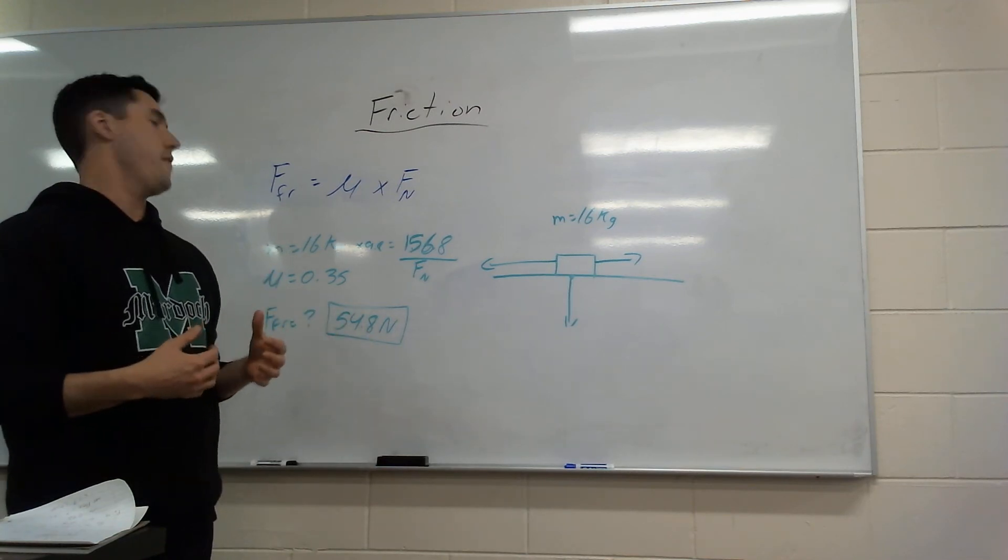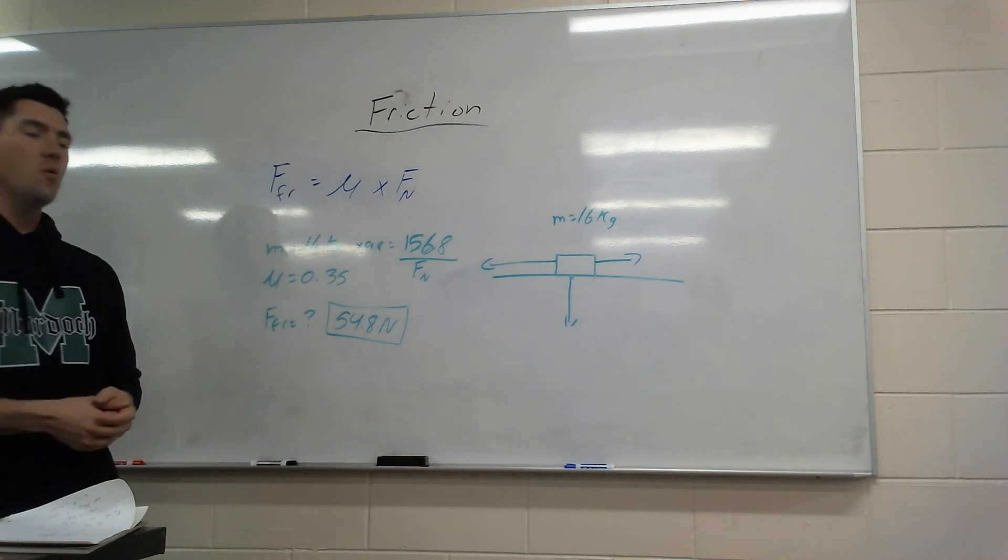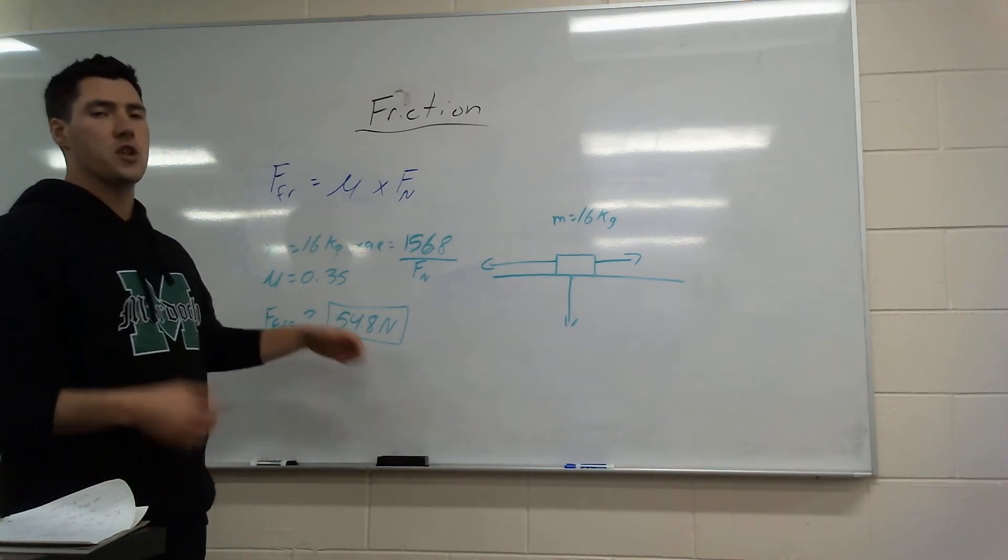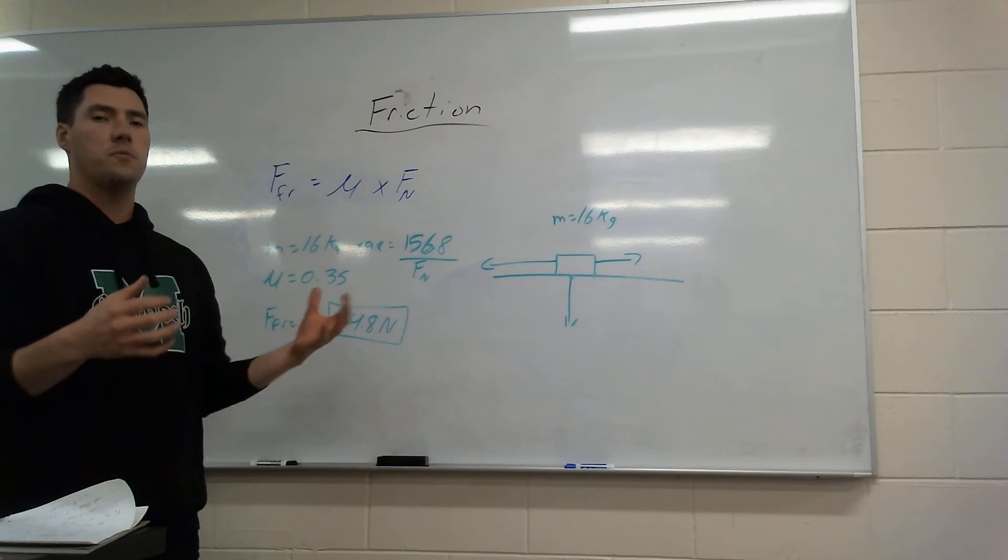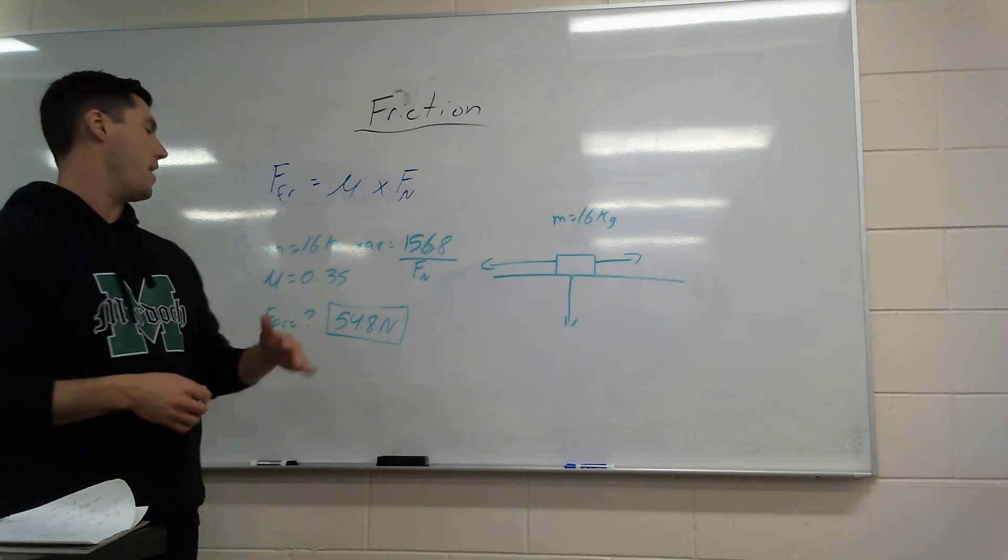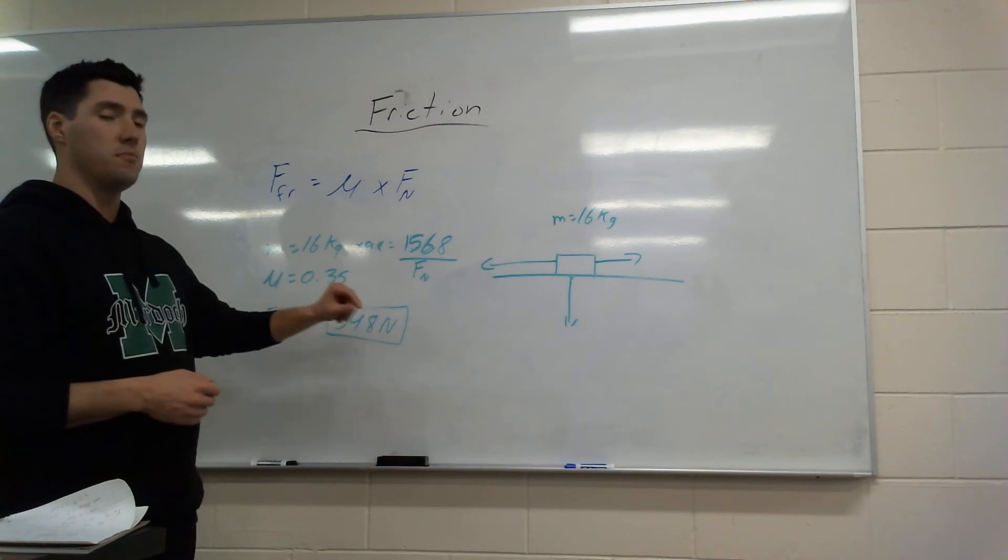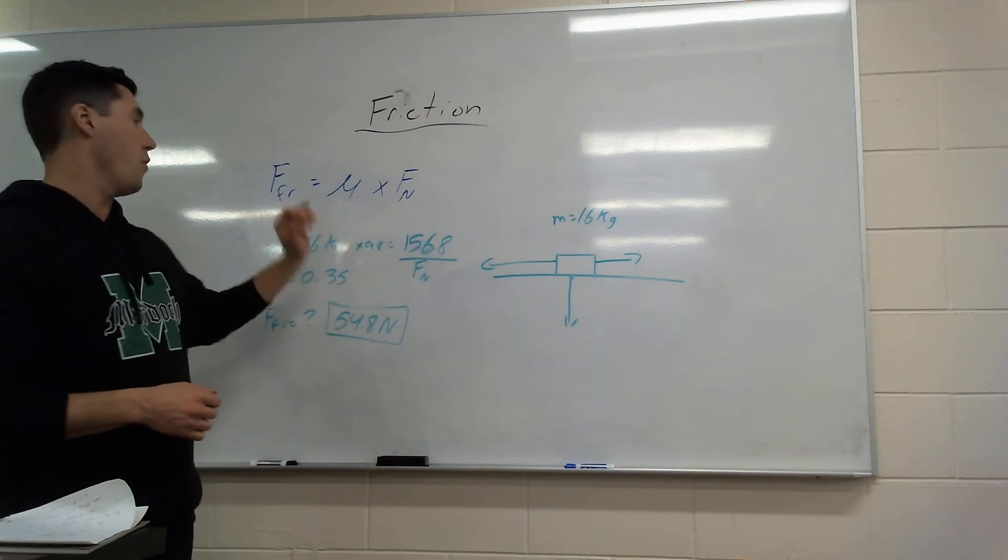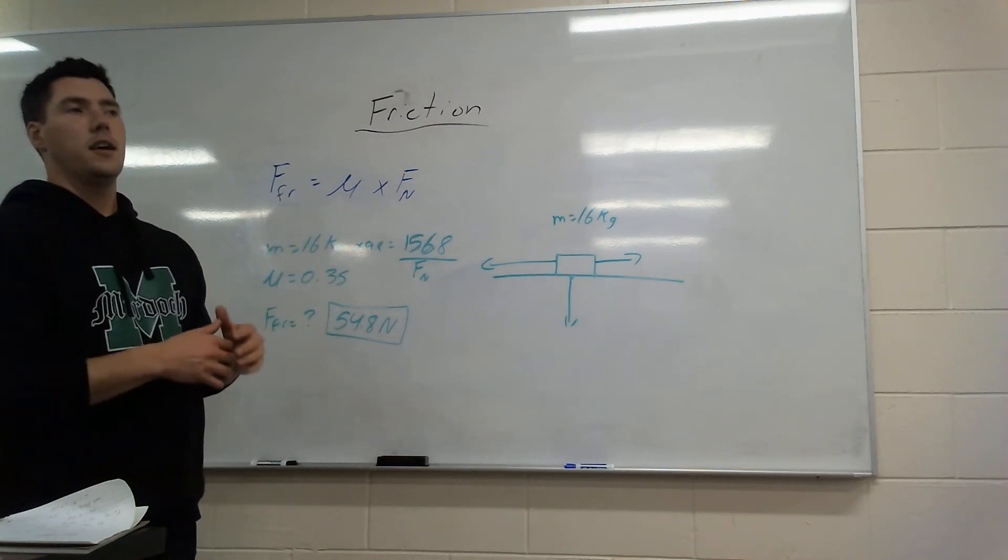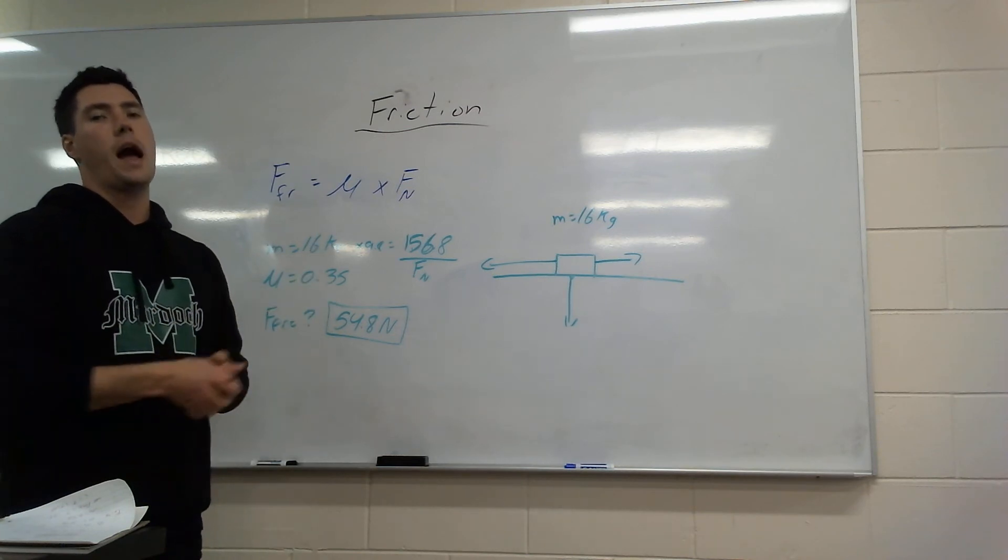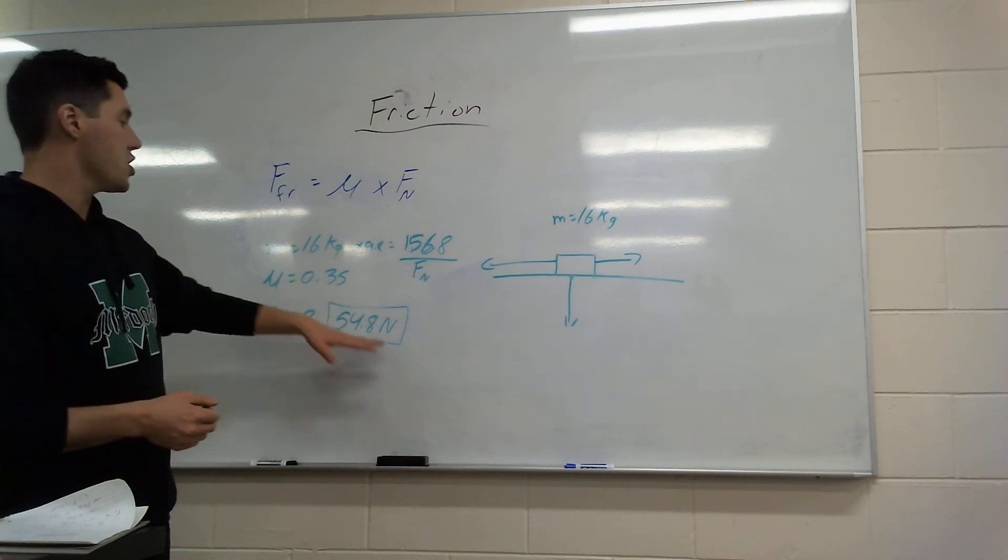If I pull with 60 newtons, now I'm greater than friction. This box or whatever this object is will start moving because I have beaten the force of friction. So this force friction is not going to change at all. The mass is there. The coefficient of friction is not going to change. The net force could change depending on how hard I pull. So there's question number two.